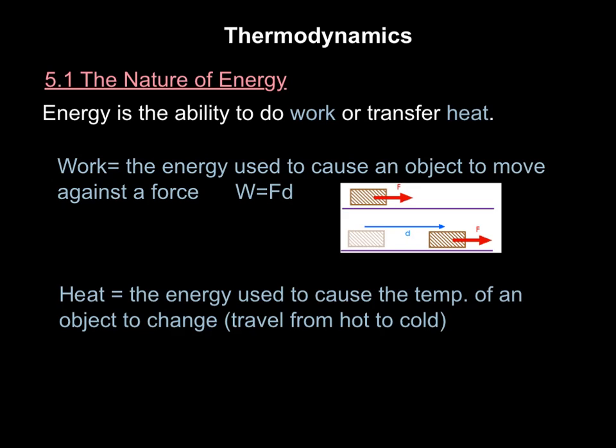Our first section in this chapter focuses on the nature of energy. To define energy, it's the ability to do work or transfer heat. Work is the energy used to cause an object to move against a force. Many of you who took physics remember this equation: work equals force times distance. So work is the energy it takes for a force to be applied over a specific distance. Heat is the energy used to cause the temperature of an object to change. One important thing to remember about heat is that heat travels from hot to cold, from a hotter object to the cooler object.